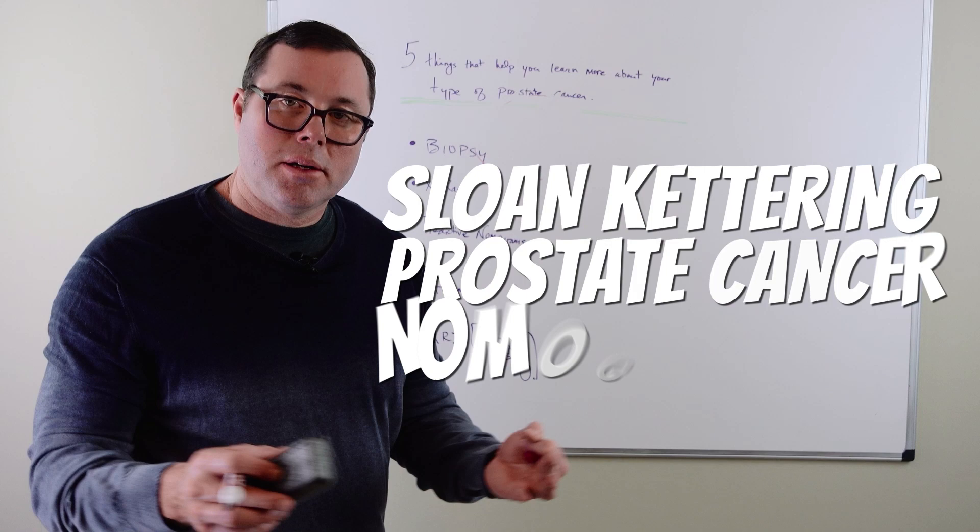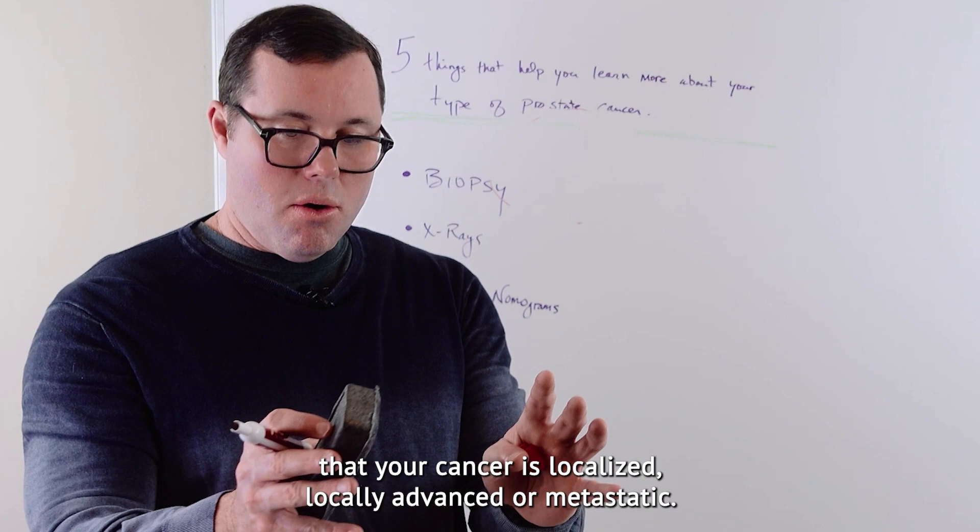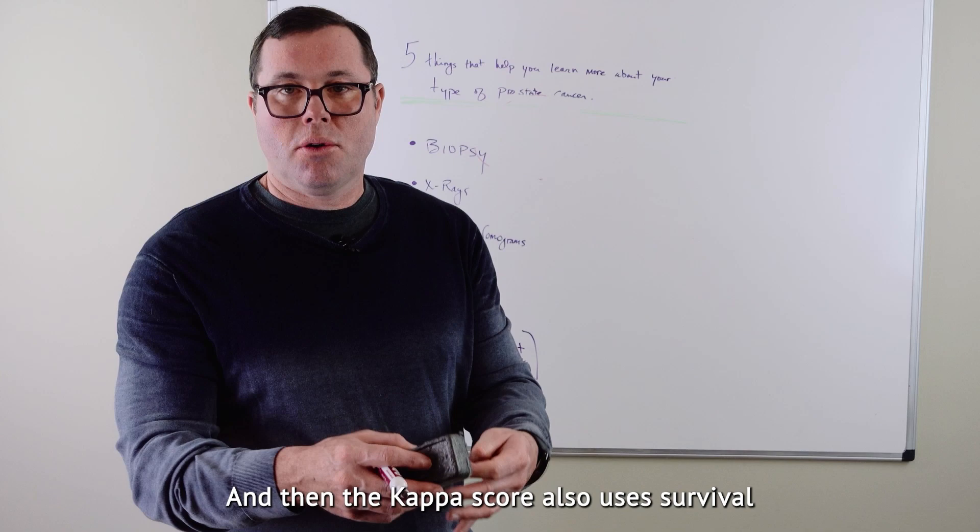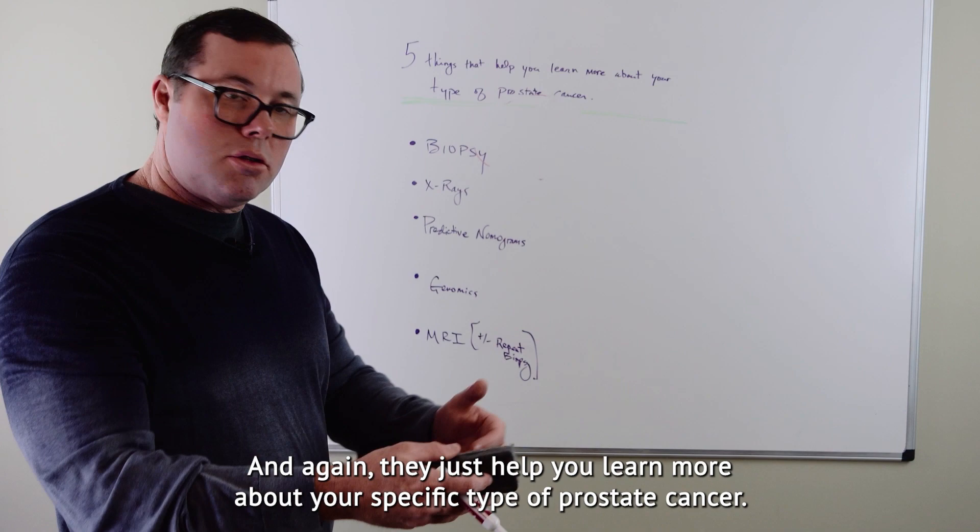These are great tools to get a lot of information about your prostate cancer. And it essentially shows you what your chances are that your cancer is localized, locally advanced, or metastatic. And then the Capra Score also uses survival and age to look at prostate cancer survival. So these are helpful. And again, they just help you learn more about your specific type of prostate cancer.